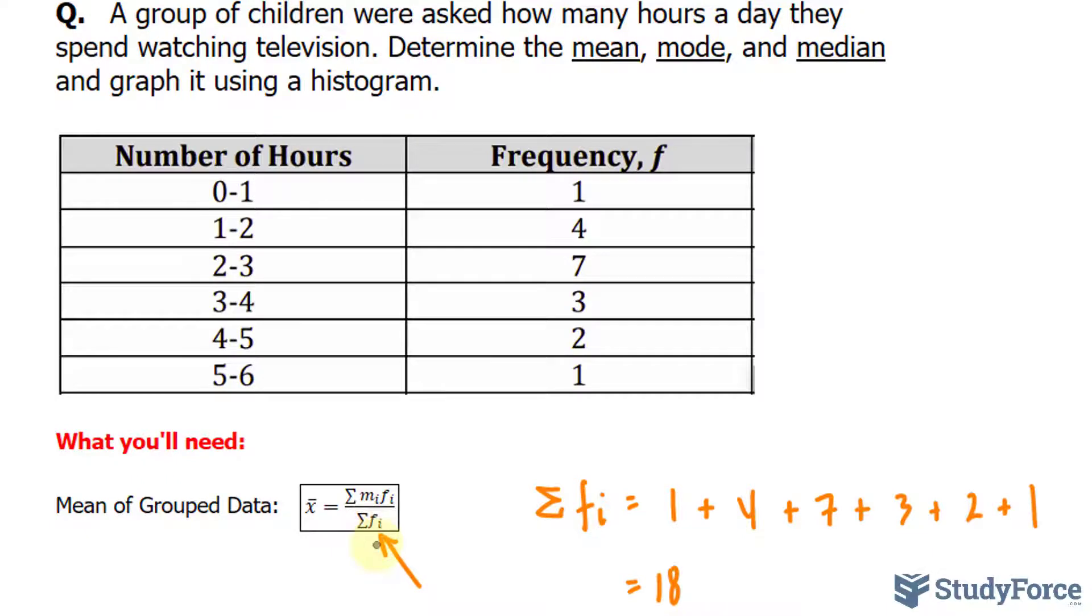OK, so we have the denominator being 18. What about the top part? Well, first of all, we need to create another column, which we'll call midpoint. And that's the midpoint of each of these.